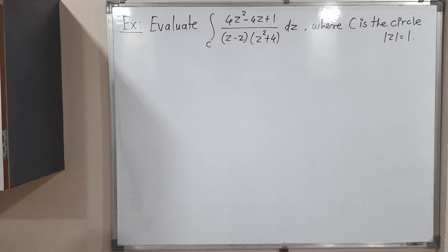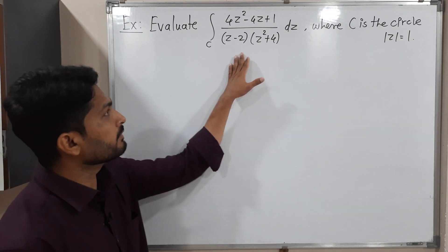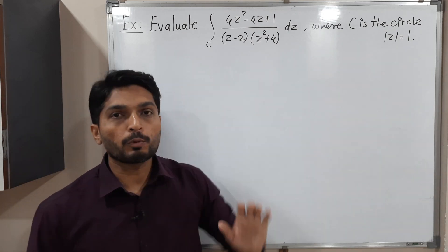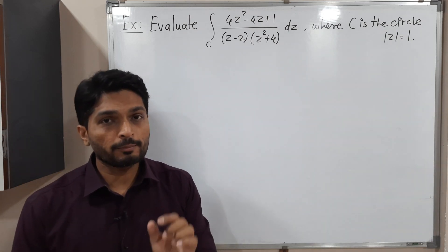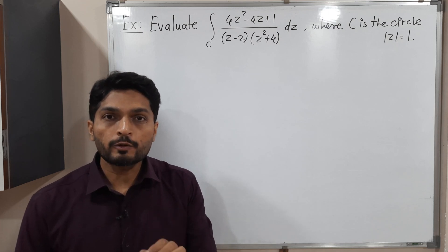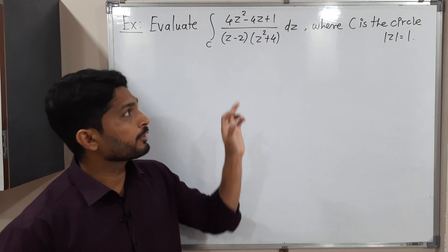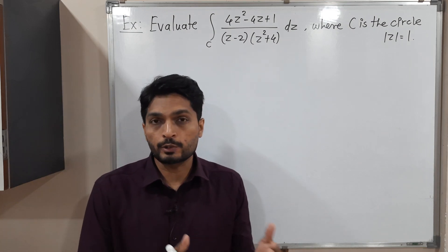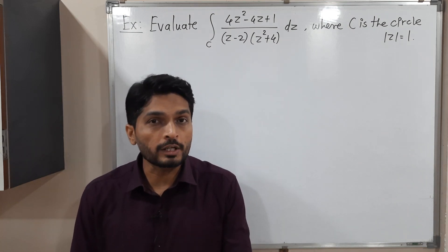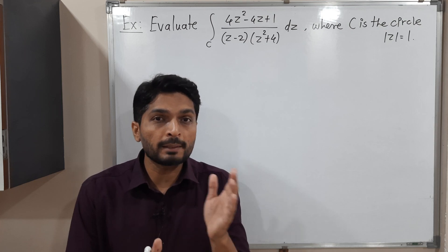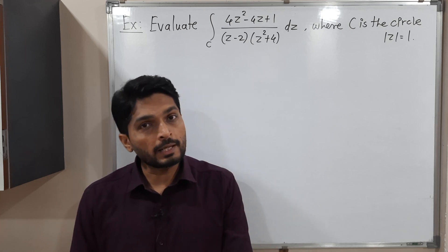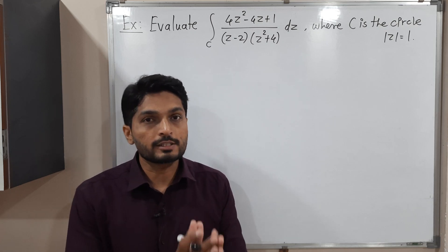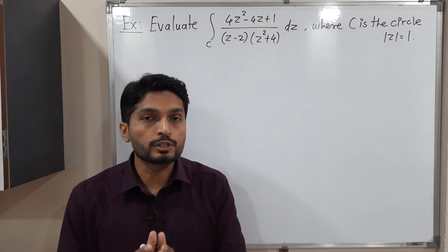Hi everyone, let us discuss this example. They have given a complex integration where C is a circle |z| = 1. We have to find the value of this integration. This is a playlist of Cauchy's residue theorem, so first of all we will check that Cauchy's residue theorem is applicable or not. If it is applicable, we will solve this problem with the help of Cauchy's residue theorem.